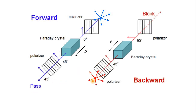Now let's look at the light on the way back. It is unpolarized light. Passing through the first polarizer, it's 45 degrees polarized. But now, passing through the Faraday crystal — which is a non-reciprocal crystal — as we are now moving against the magnetic field, the result will not be vertically polarized, but rather another 45 degrees added to the first polarization. So it will be 90 degrees polarized, and then it will be blocked by the second polarizer. So light passes in one direction and is blocked in the other direction. This is an optical isolator.